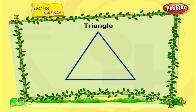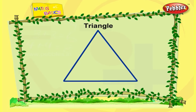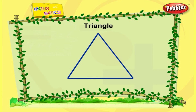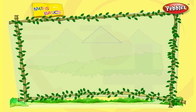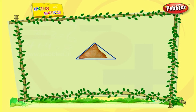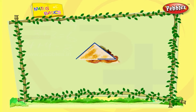This is triangle. We shall see some objects in triangular shape. It's a mountain. This is samosa. I like it very much. It's a sandwich.